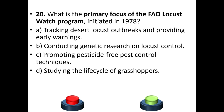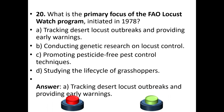Question 20: What is the primary focus of the FAO Locust Watch program, initiated in 1978? a) Tracking desert locust outbreaks and providing early warnings, b) conducting genetic research on locust control, c) promoting pesticide-free pest control techniques, or d) studying the life cycle of grasshoppers. The answer is option A — tracking desert locust outbreaks and providing early warnings.